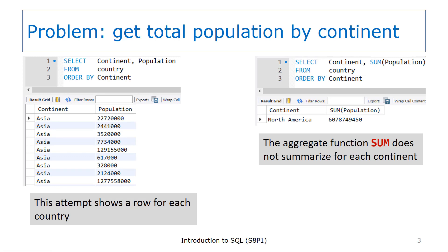To get started, let's consider what sounds like a simple problem. Given the country table, get the total population for each continent and display the continent name and total population in order by the continent name. This slide shows an attempt at trying to solve the problem. On the left side, the SELECT statement really doesn't try to get the total population for each continent — it is just used to list the data that is available. What you see is a list of continent and population values. We're not showing the country name, so there is no context for the population figures. All we know is that somewhere on the continent, there is a country with the population that is shown.